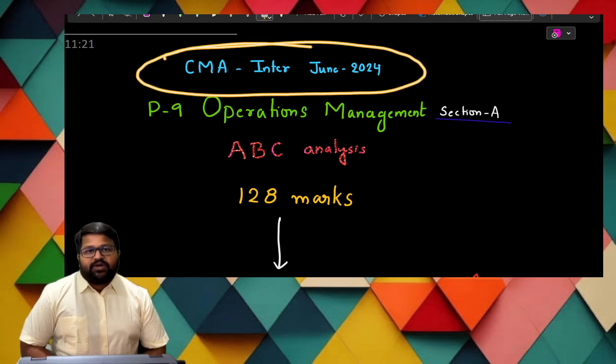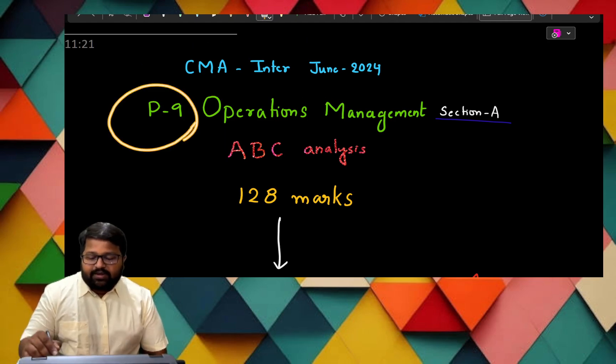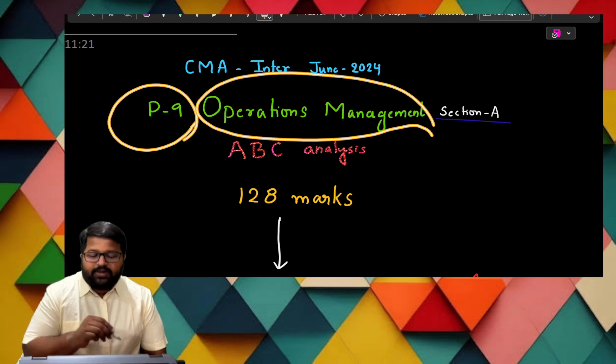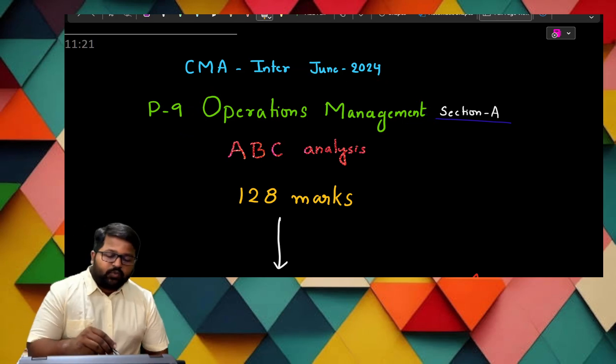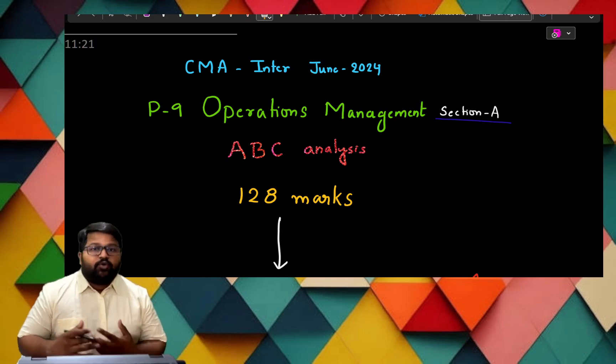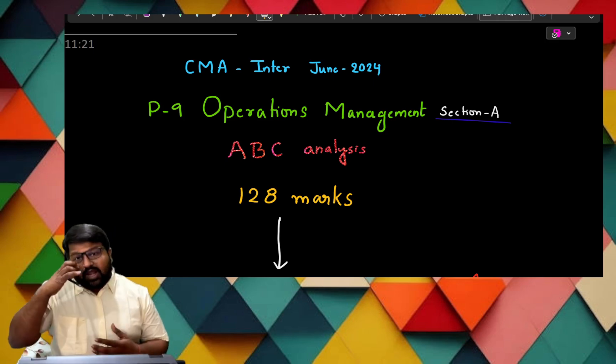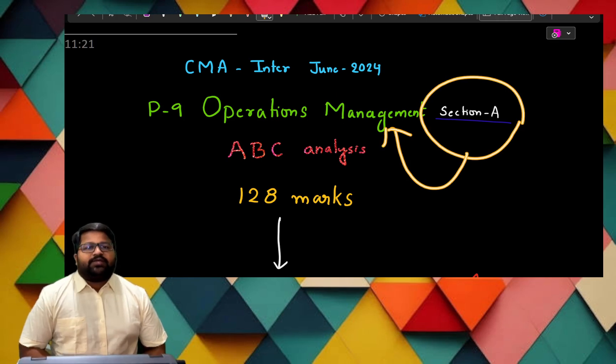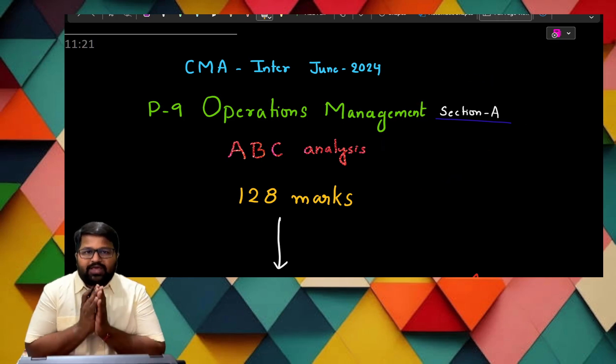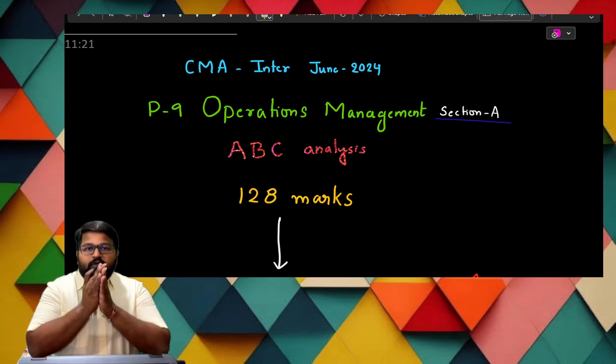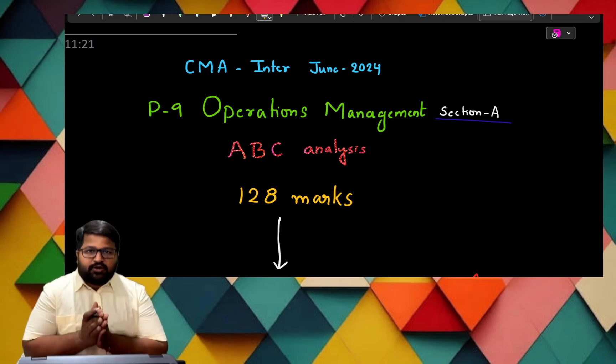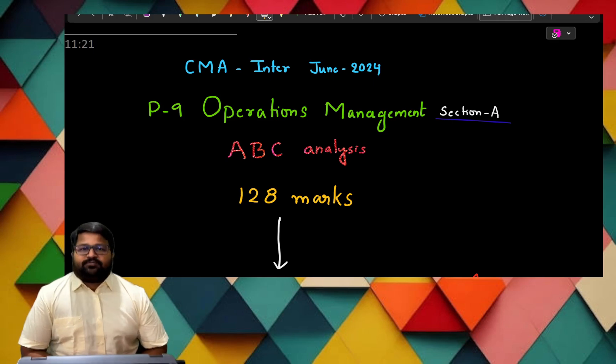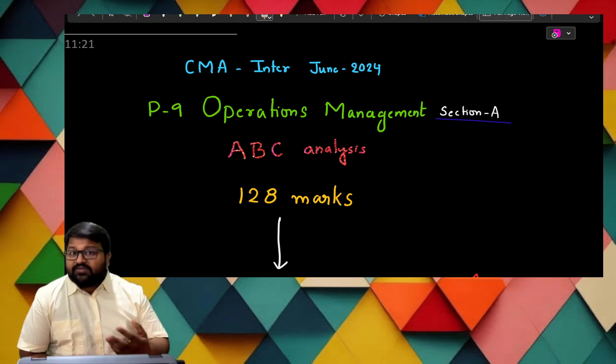The topic we are dealing with is clear: it is CMA Inter for CMA Inter June 2024, Paper 9 OM Operations Management, part 1 and part 2. We are having OM in which we have two parts - Operations Management and Strategic Management. Now I am dealing with Section A, that is Operations Management. I have brought to you ABC analysis, and if we follow this analysis, for sure in OM I can guarantee you 55 plus score.